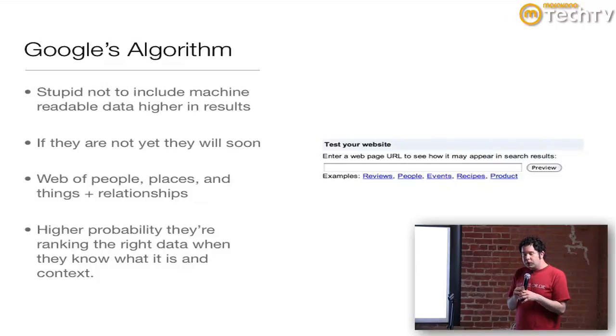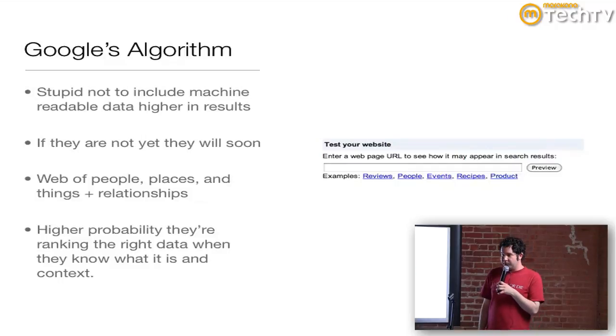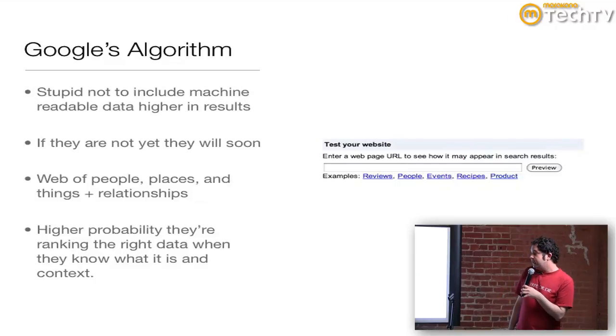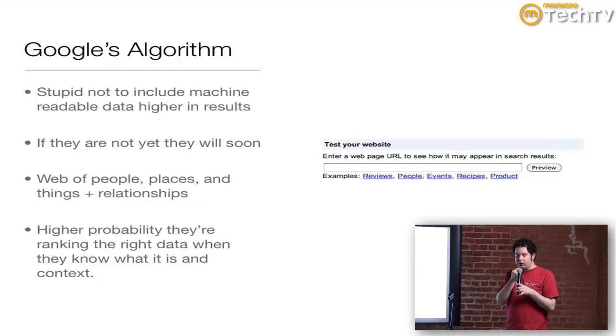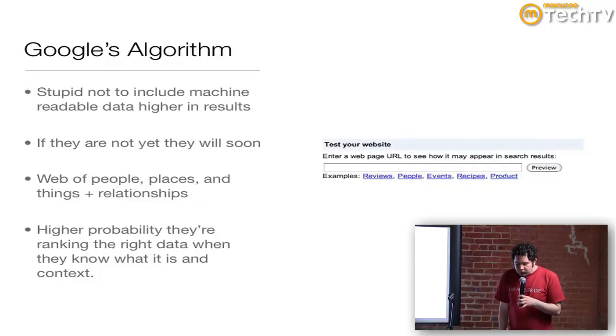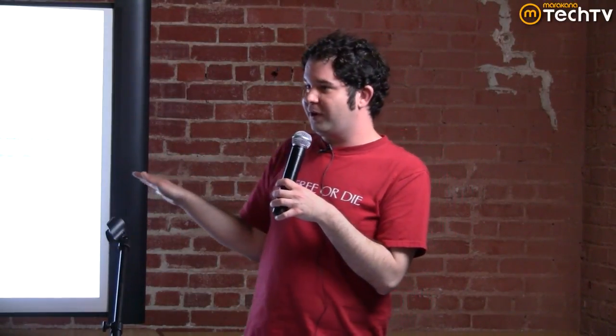A little bit about Google's algorithm — it's very hard to be ahead of them, but they're foolish if they don't include machine-readable data higher in the results. If they're not doing it yet, they're going to do it soon, so you probably want to get on board before the algorithm changes. It's going to be a web of people, places, and things plus relationships, so it's very important we all link together with the global data cloud and these vocabularies. They're going to rank you higher because they know they have the right data and they have it in context.